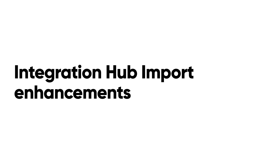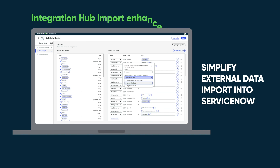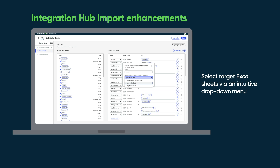Integration Hub Import Enhancements: Simplify external data import into ServiceNow. Map and import into multiple target tables for speeding import configurations. View target field mapping with check mark indicator for source fields. Select target Excel sheets via an intuitive drop-down menu.